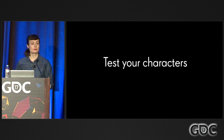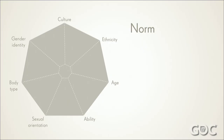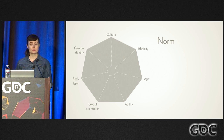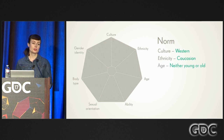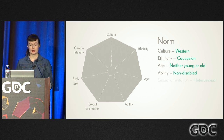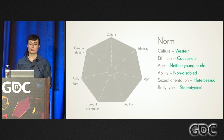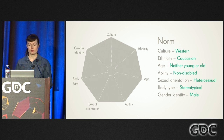We've developed a test to see how inclusive and diverse a game is — it's called Diversity Space. You start by identifying the norm. Here we use the norm for action games developed in the Western world, which is almost always applicable for productions aimed at the Western market. The culture is Western, ethnicity is Caucasian, age is neither young nor old — women are usually younger than men. Ability is non-disabled, sexual orientation is heterosexual, and body type is stereotypical: slim and curvy for women, athletic or bodybuilder types for men. Gender identity: male is the norm, women come second, and all others are very uncommon. The norm is the green area — a really, really tiny diversity space.